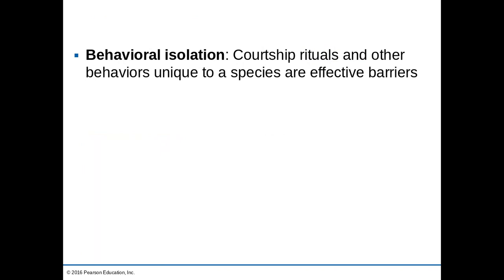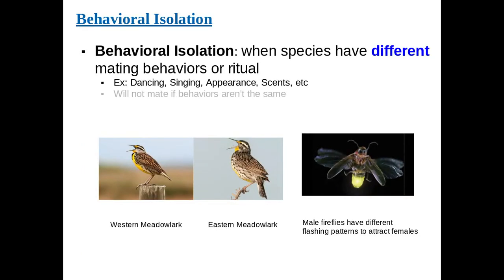Behavioral isolation has to do with courtship and mating behaviors that are unique to a specific species — like a mating dance or mating song. These organisms will not mate if their behaviors are not the same or if they don't recognize them. For example, the Western meadowlark and the Eastern meadowlark have very distinct songs. When mating, they will only mate with individuals that sing the same song, which is an example of behavioral isolation.